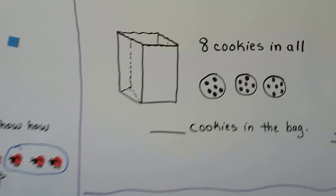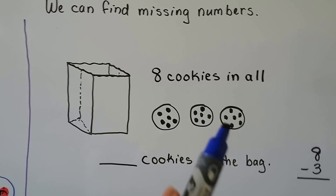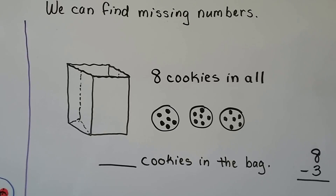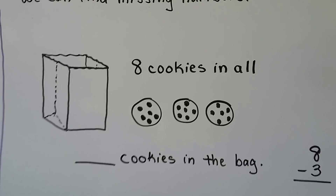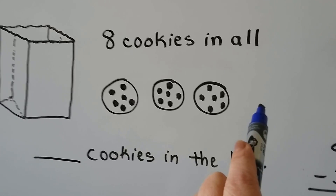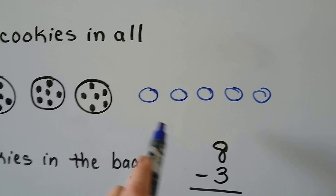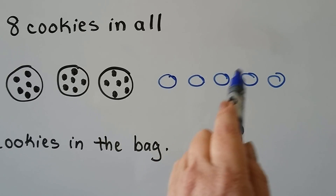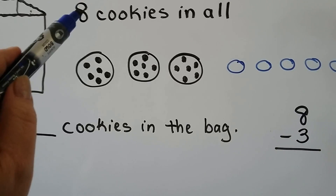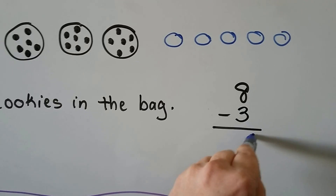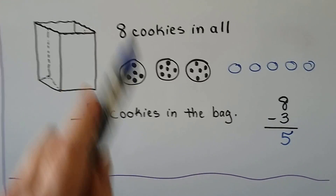We can find missing numbers. Here we have a bag — it tells us there are eight cookies in all, but I only see three. So how many cookies are in the bag? We can draw more cookies until we have eight, then count the ones we drew: five. That means five cookies must be in the bag. We could also do eight minus three, which equals five.